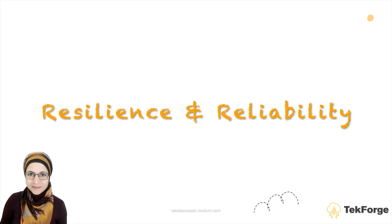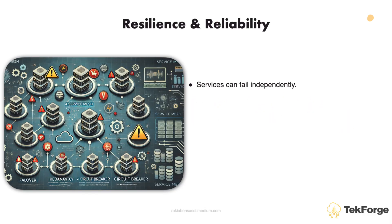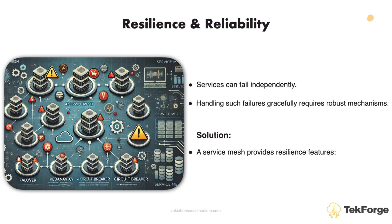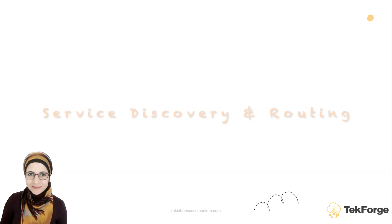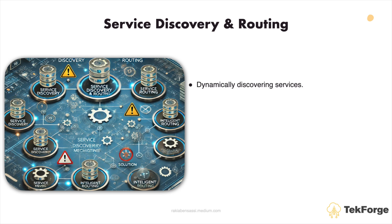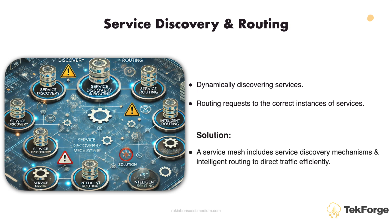Resilience and reliability: services can fail independently, and handling such failures gracefully requires robust mechanisms. A service mesh provides resilience features such as retries, circuit breakers, and load balancing to ensure reliability. Service discovery and routing: dynamically discovering and routing requests to the correct instances of services in a distributed environment is challenging. A service mesh includes service discovery mechanisms and intelligent routing to direct traffic efficiently.